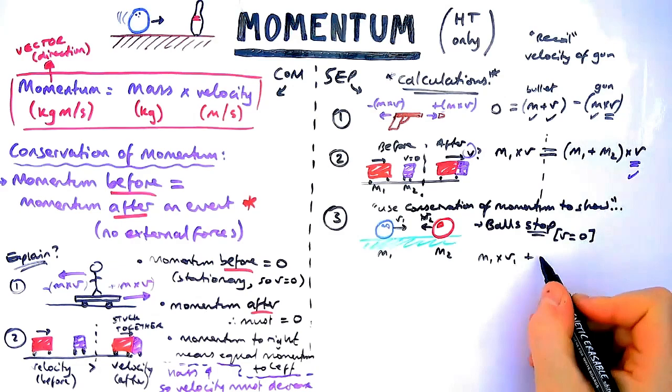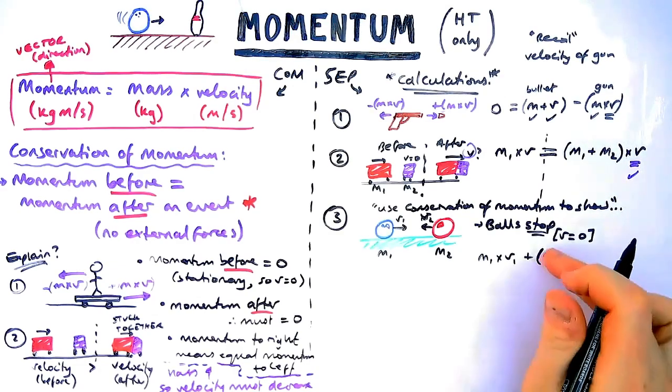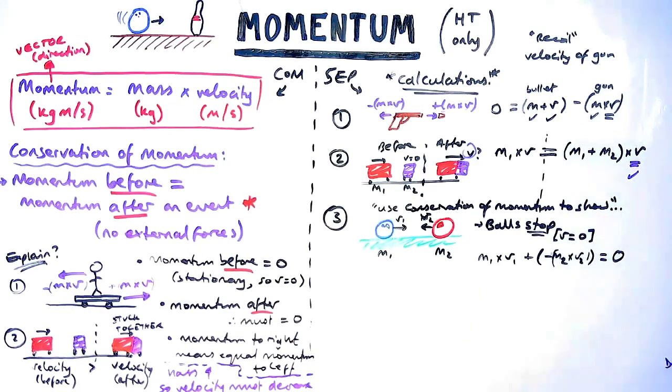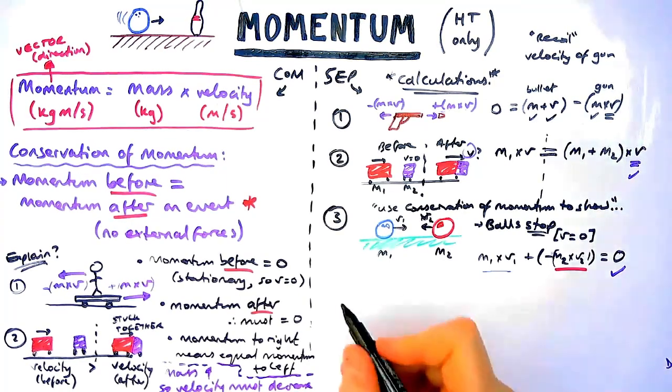That means the momentum at the start has to be zero as well, it's kind of the opposite of our explosion. So what we'd do is we'd do the mass times the velocity of the first ball added to the negative momentum of the second ball because it's traveling in the opposite direction and prove that equals zero. You can plug your numbers in or if you're asked to work something out you could work it out that way as well.